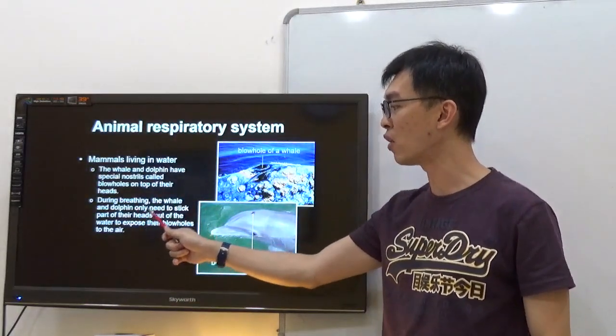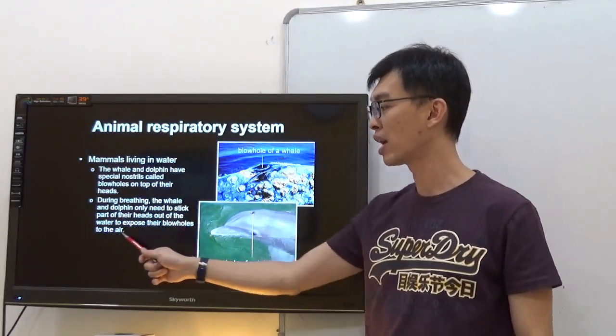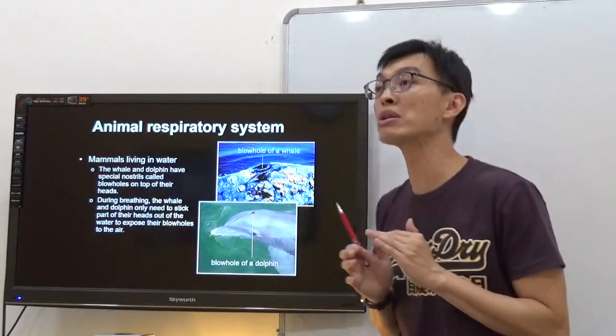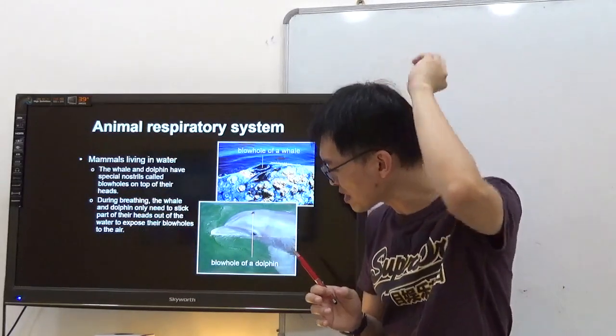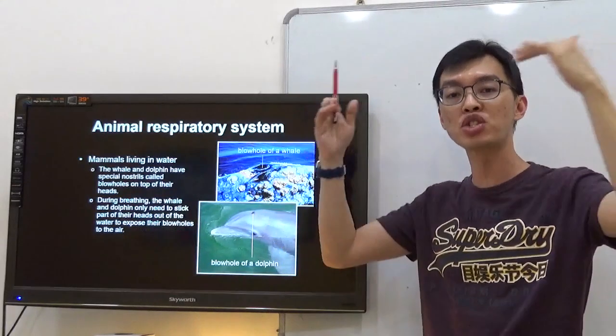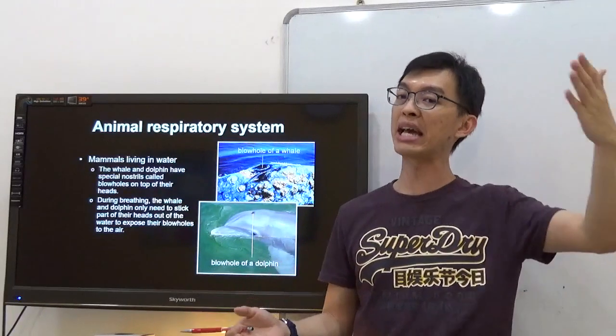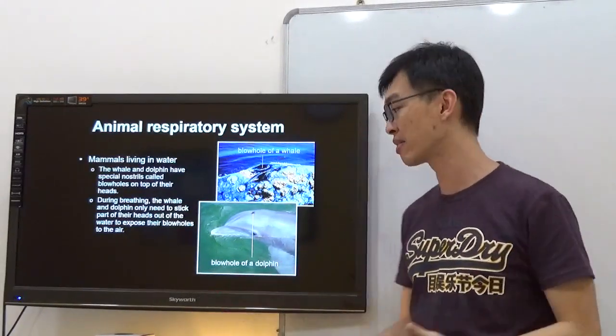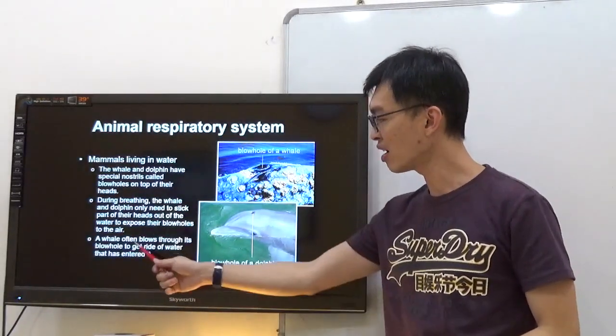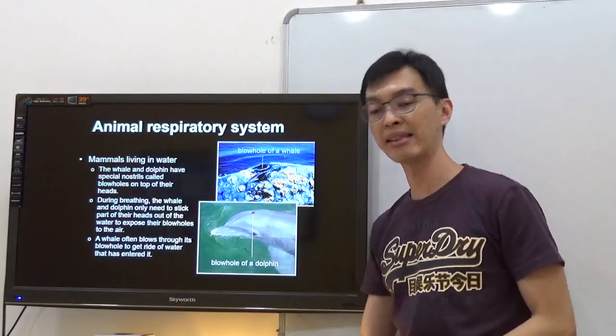During breathing, whales and dolphins only need to stick part of their head out of the water to expose their blowholes to the air. They come out to the surface and force out whatever water goes through the blowhole. When they force it out, they are also forcing out carbon dioxide so that they can take in oxygen from the surrounding. A whale often blows through the blowhole to get rid of water that has entered it.